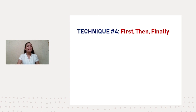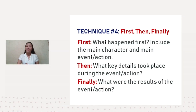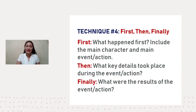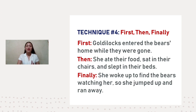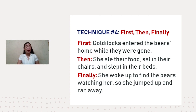Let's have the last technique: First, Then, Finally. This technique helps students summarize events in chronological order. First — what happened first? You may include the main character and main event or action. Then — what key details took place during the event or action? Finally — what were the results of the event or action? Example using Goldilocks and the Three Bears: First, Goldilocks entered the bears' home while they were gone. Then, she ate their food, sat in their chairs, and slept in their beds. Finally, she woke up to find the bears watching her, so she jumped up and ran away.